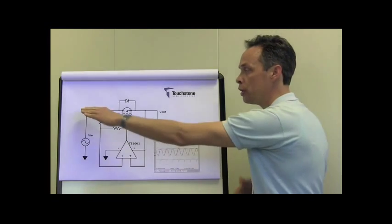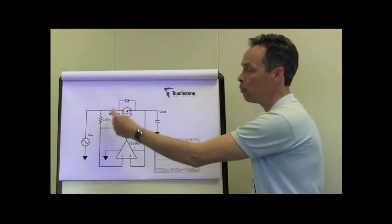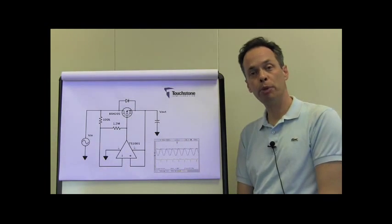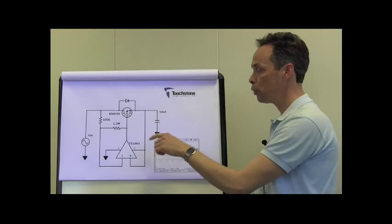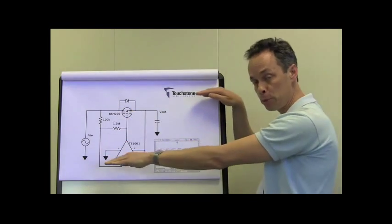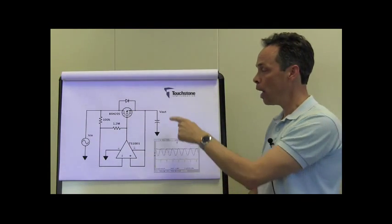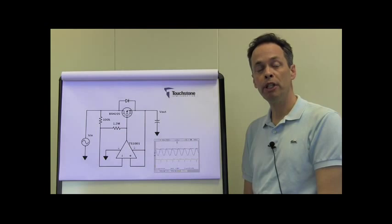When the input voltage is higher than the output voltage, the feedback around the 1001 and the PMOS turns the PMOS on, and the output voltage follows the input voltage. Then, when the input drops below the output, the PMOS is turned off, and the output stays at its last peak value.